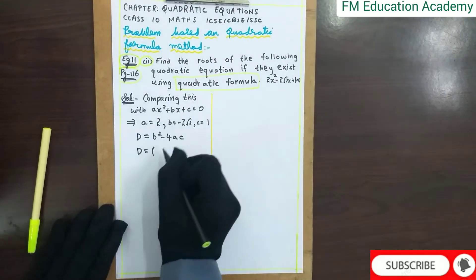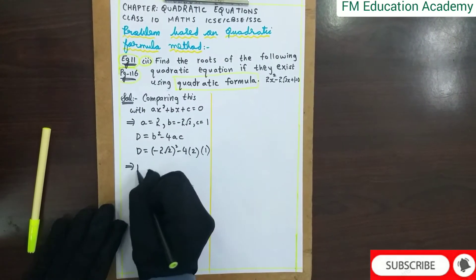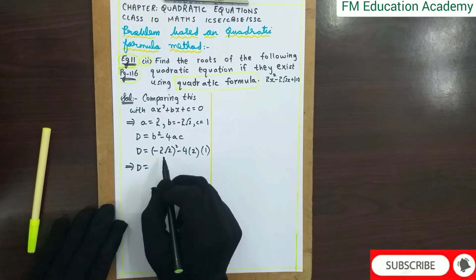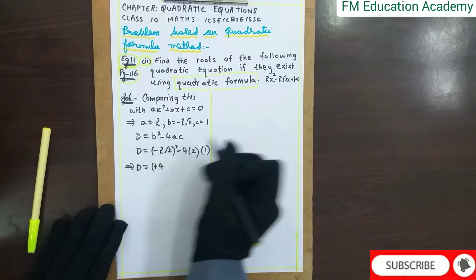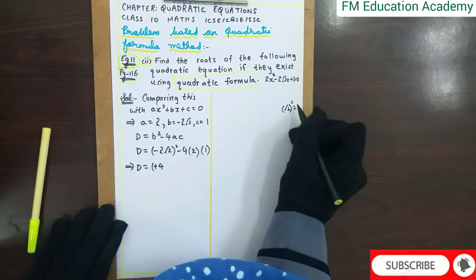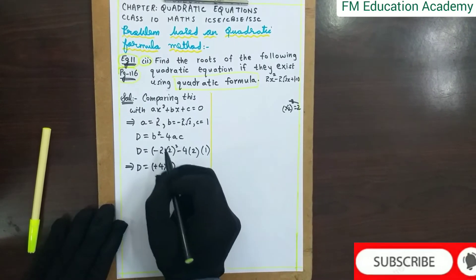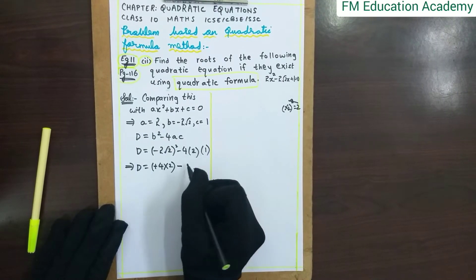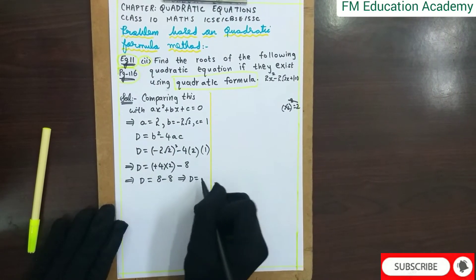So D = (−2√2)² − 4 × 2 × 1. Now, (−2√2)² means we square both 2 and √2 separately: (−2)² = 4, and (√2)² = 2, so (−2√2)² = 4 × 2 = 8. Then 4 × 2 × 1 = 8. Therefore D = 8 − 8 = 0.